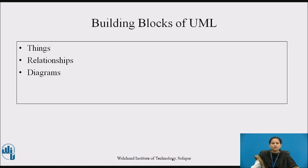To start with, there are three important blocks in UML: things, relationships and diagrams. Things are the abstractions that are first-class citizens in a model. Relationships tie these things together, and diagrams group interesting collections of things.